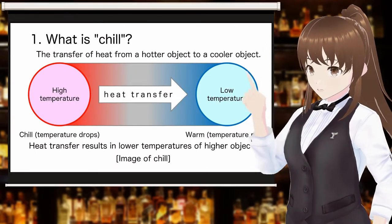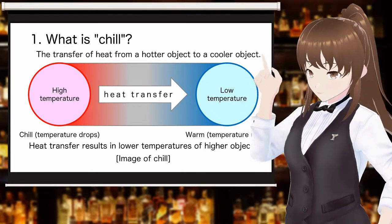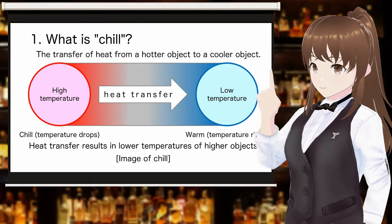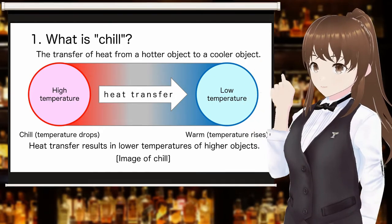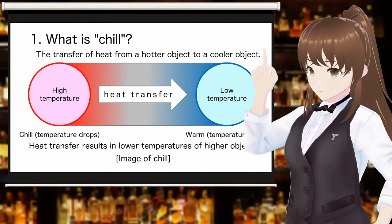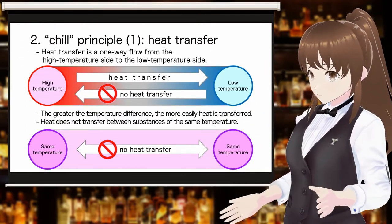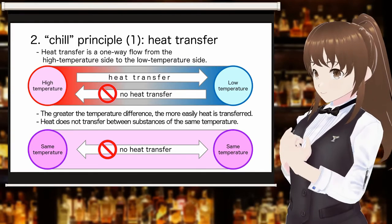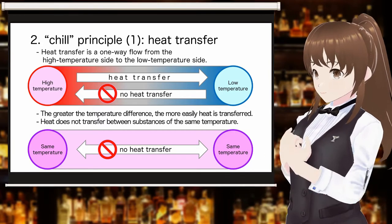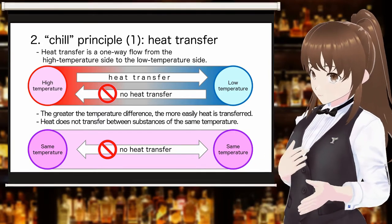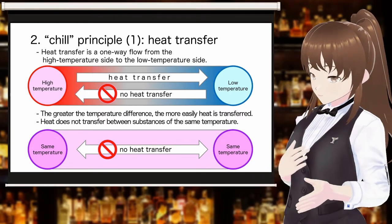To chill is to transfer heat from an object with a higher temperature to an object with a lower temperature. Heat is transferred to lower the temperature of the object on the hot side. Heat transfer is one-way traffic from the high temperature side to the low temperature side. There is no heat transfer from the low temperature side to the high temperature side. The greater the temperature difference, the more easily heat is transferred.